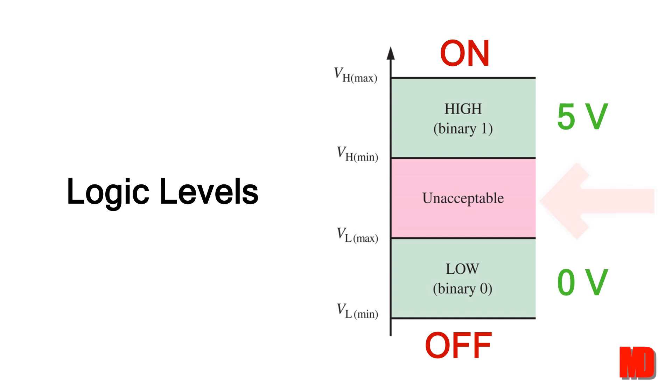The key here is that there is a buffer area between the high voltages and the low voltages so that there is no possibility for overlap in the high and low ranges.